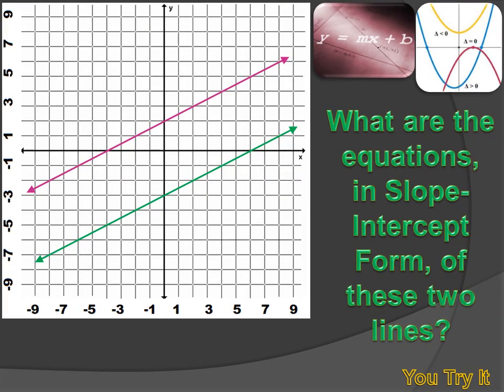You try this one. Determine the equation in slope-intercept form for the purple line and the green line. Then look at those two equations and tell me what you think is unique about them. Hit your pause button, try the problem, and then hit your forward key to move on to my answer.